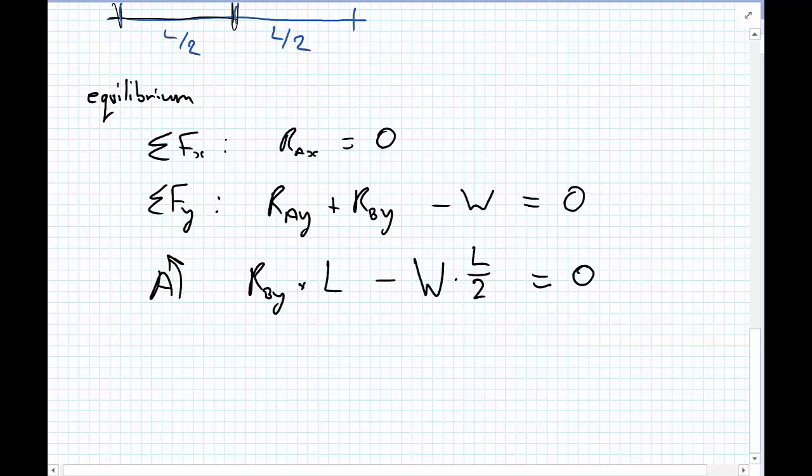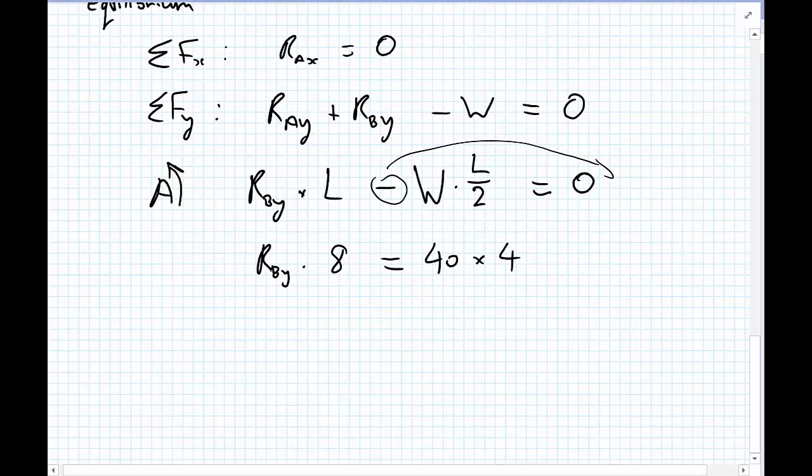Now, I'm going to substitute for the known values. So, RBY multiplied by the full length of the beam, 8 meters. And I'll take this minus, so I'll take this whole term over to the right-hand side. So equals 40, which was the total load W, multiplied by L upon 2, which is 4 meters. And so, I'll rearrange the equation, in terms of RBY, and I'll get the RBY equals 20 kilonewtons.